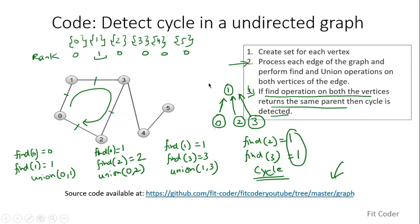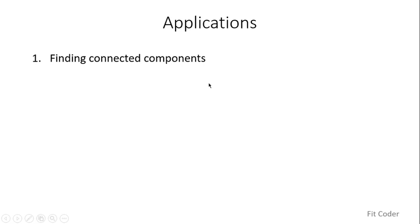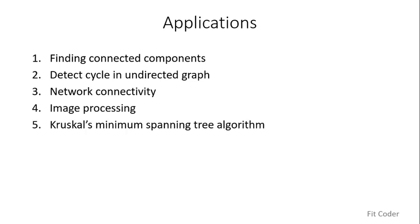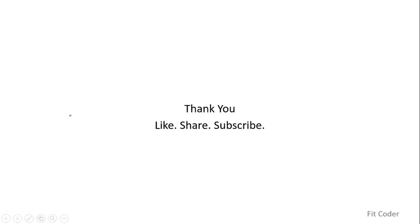There are many applications of the union find data structure. It is used to find connected components, detect cycles in undirected graphs, check network connectivity, and color connected components — as used in MS Paint and other image editing software. It is also used in Kruskal's minimum spanning tree algorithm. If you have any doubts or suggestions, please leave them in the comment box below, like, share and subscribe. This is Sandeep Thapar signing off.